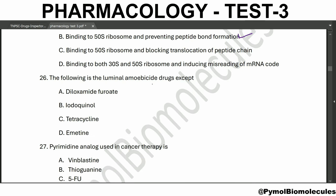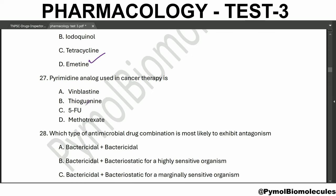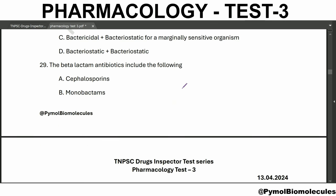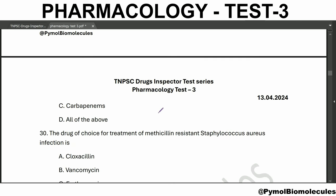The luminal amoebicide - the following is the luminal amoebicide except emetine. The pyrimidine analog used in cancer therapy is 5-fluorouracil. Which type of antimicrobial drug combination is most likely to exhibit antagonism? That is bactericidal plus bacteriostatic for a highly sensitive organism - that exhibits antagonism.